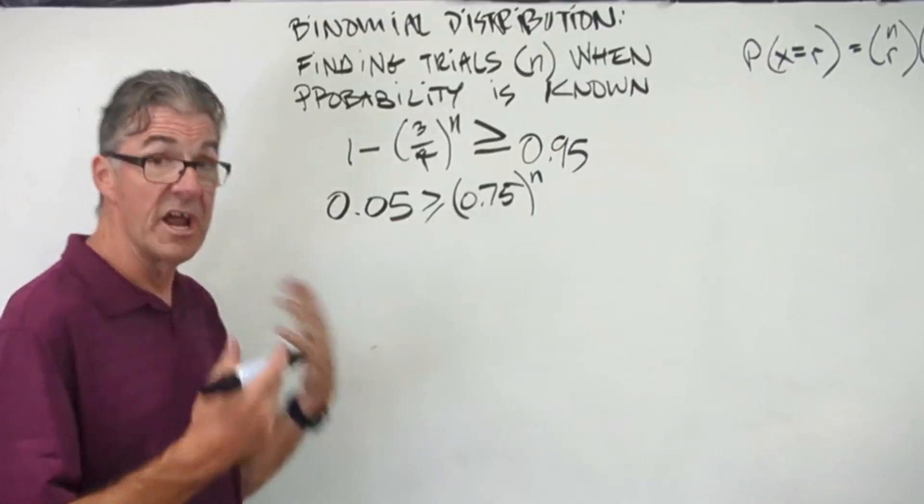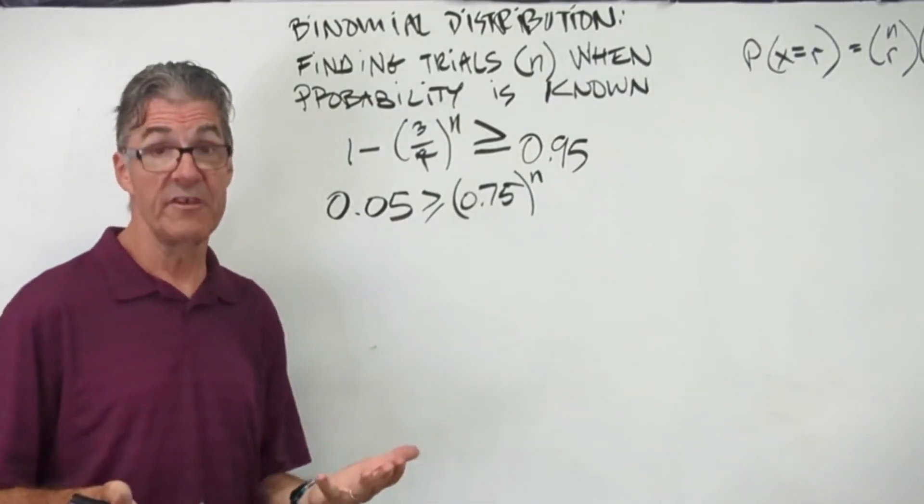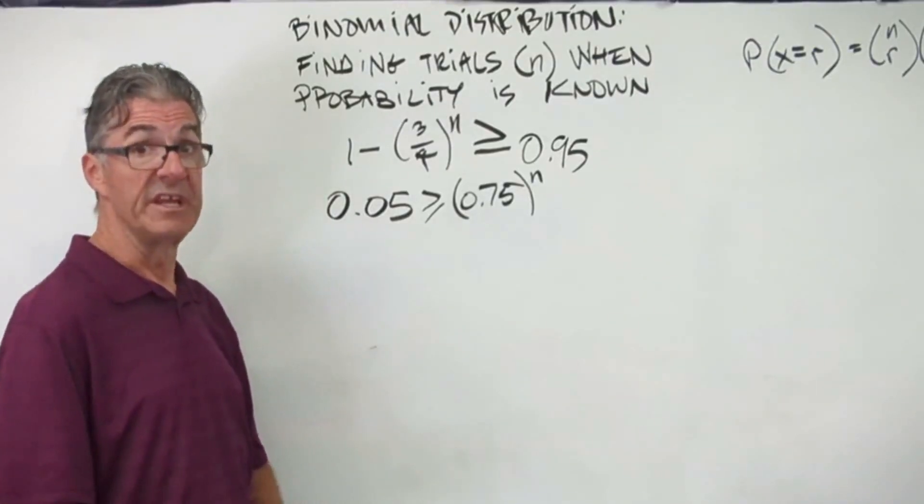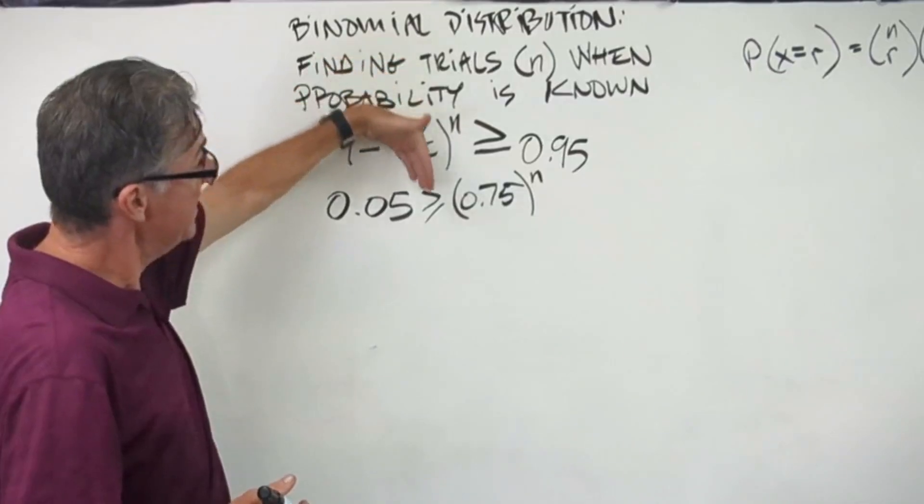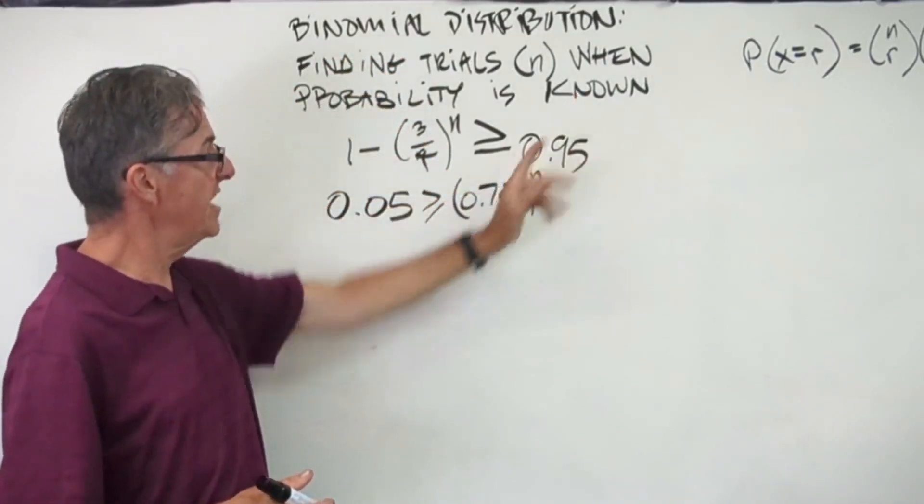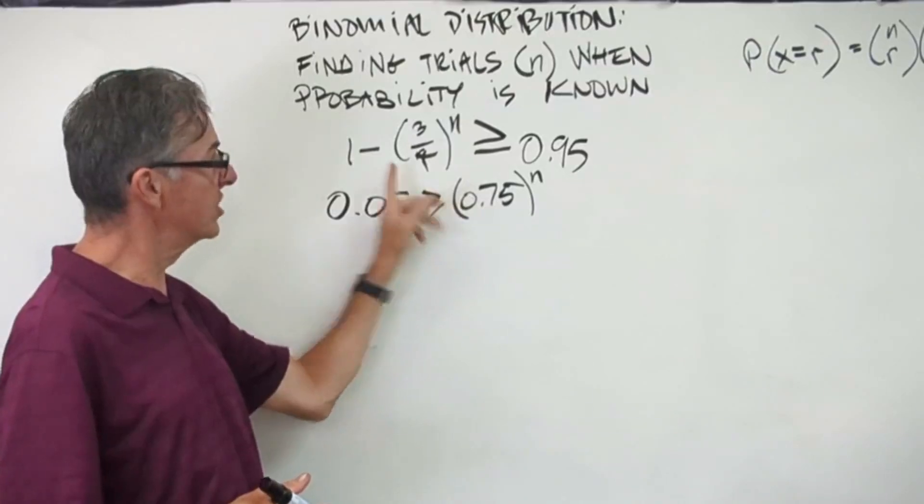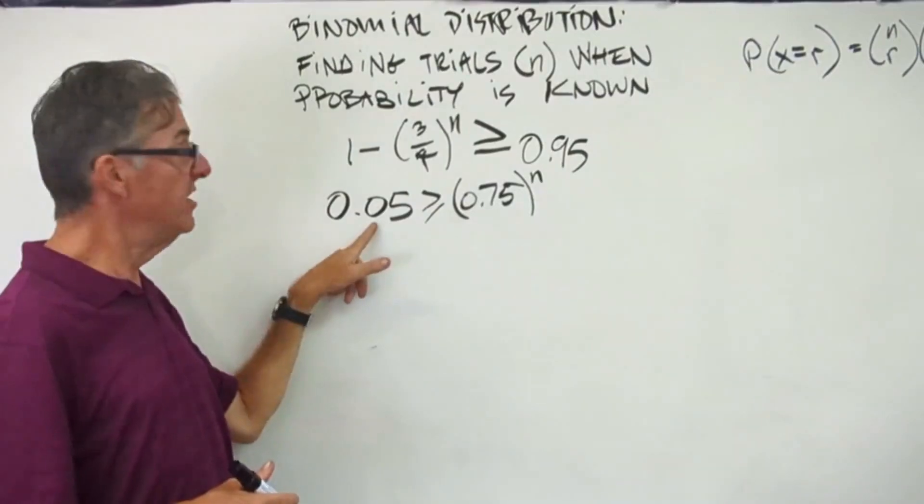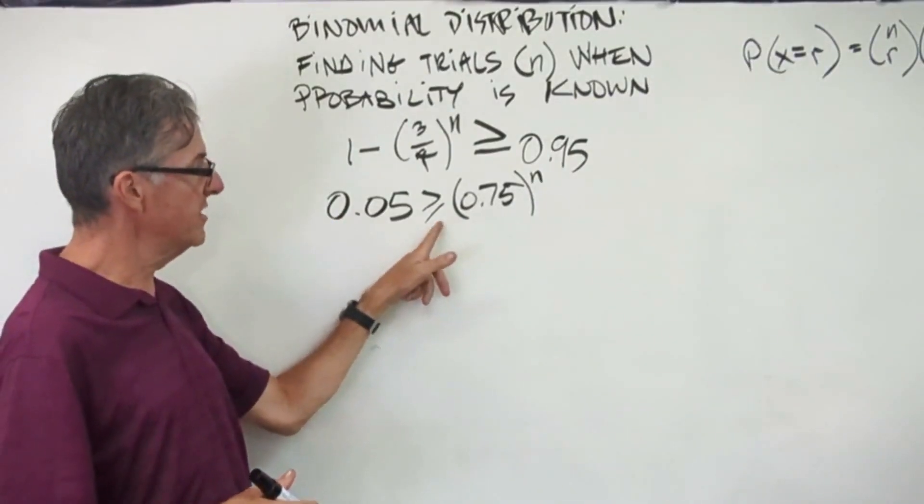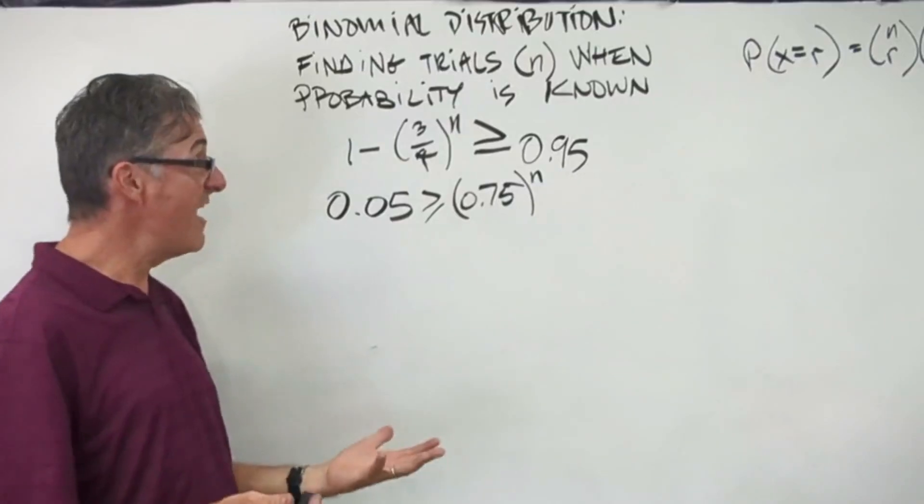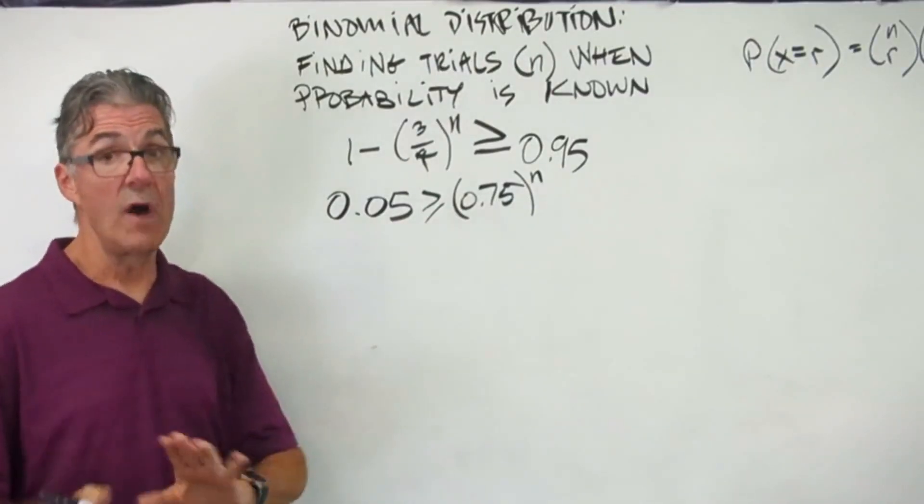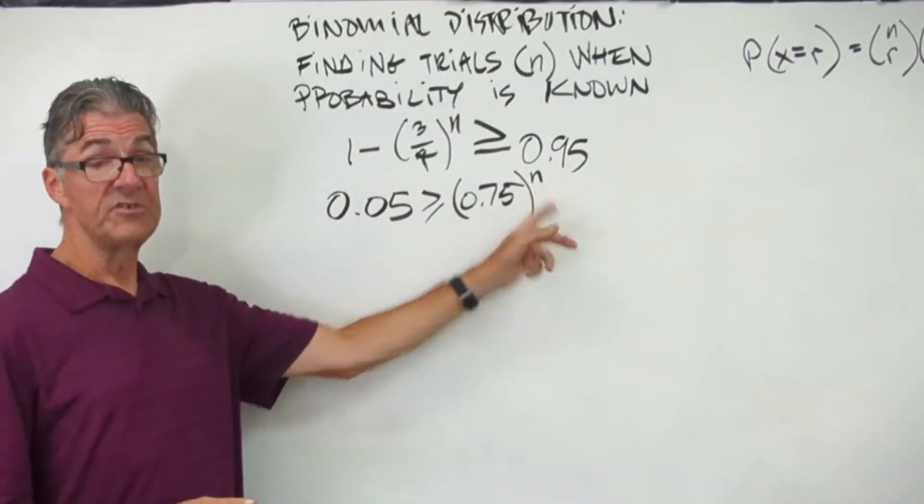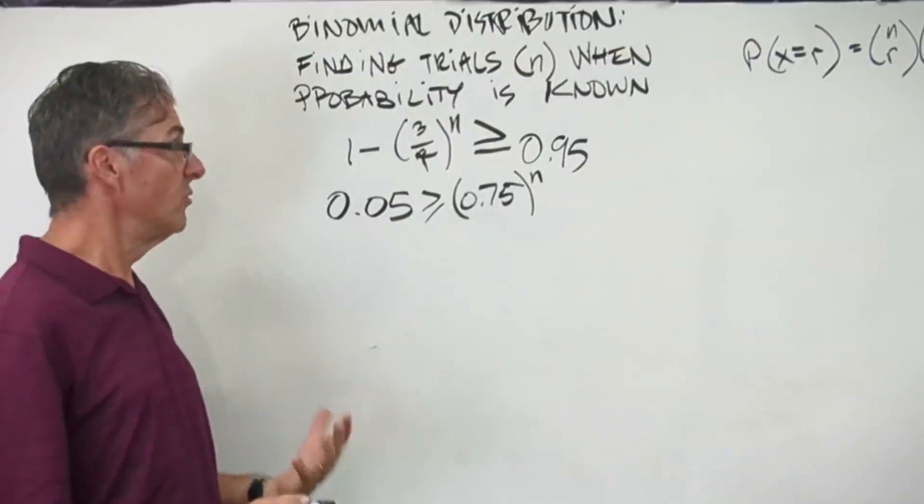Before taking the log, we can simplify this out. I'm trying to get n alone because we're solving for n. We need to know the number of trials required to get that 0.95 probability. All I did is I moved the negative three quarters to the n to this side and changed it to 0.75. So I added that term to both sides and I subtracted this term from both sides. So now I have 0.05 is greater than or equal to 0.75 to the n power. Now we need to remember how we solve equations using logs. Remember, logs come into play when you have unknowns or variables in your exponents.